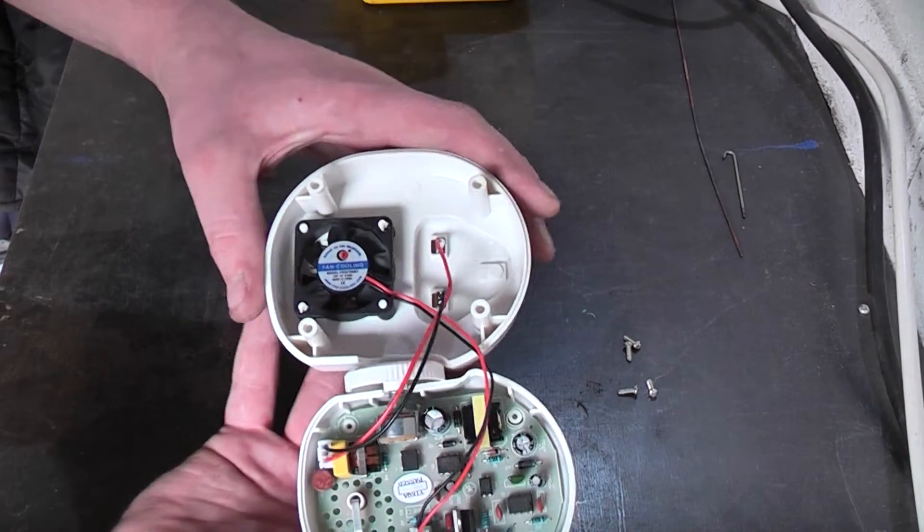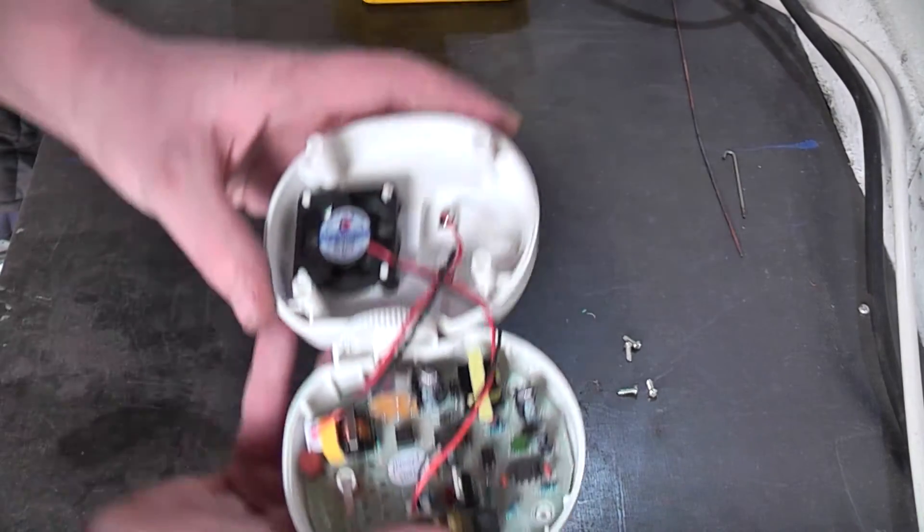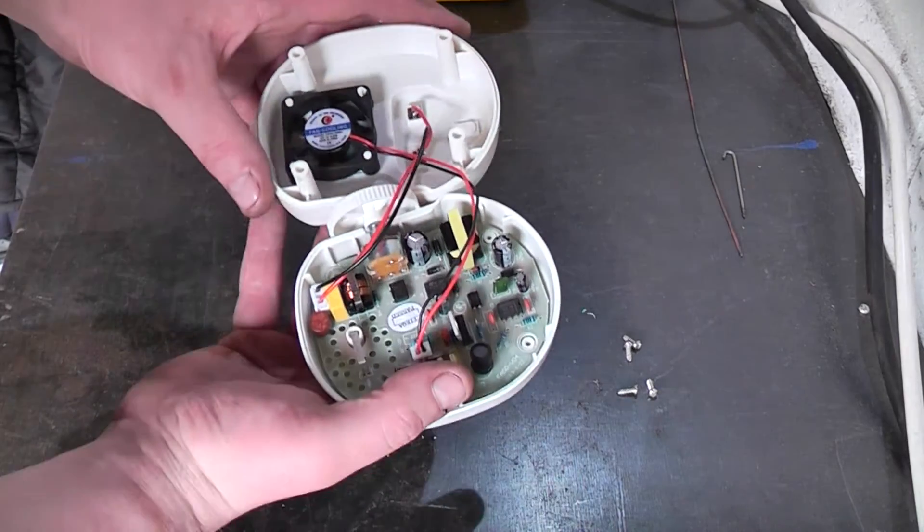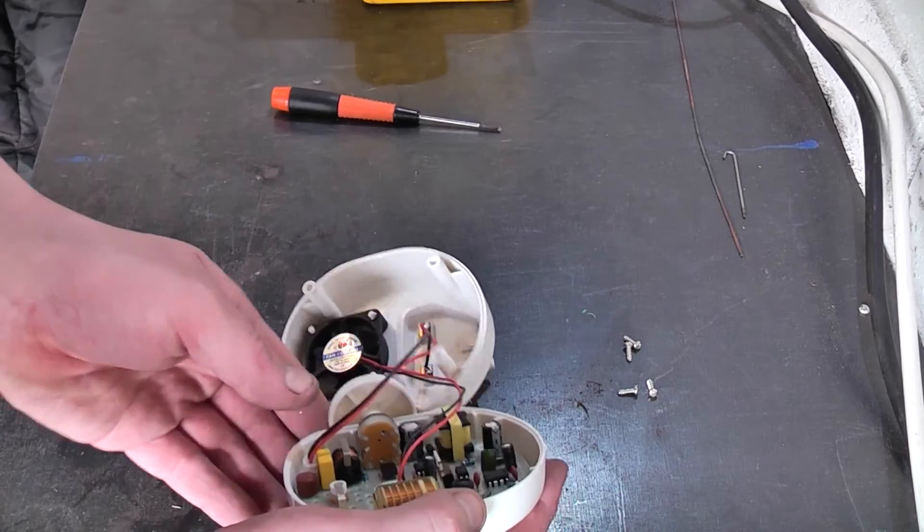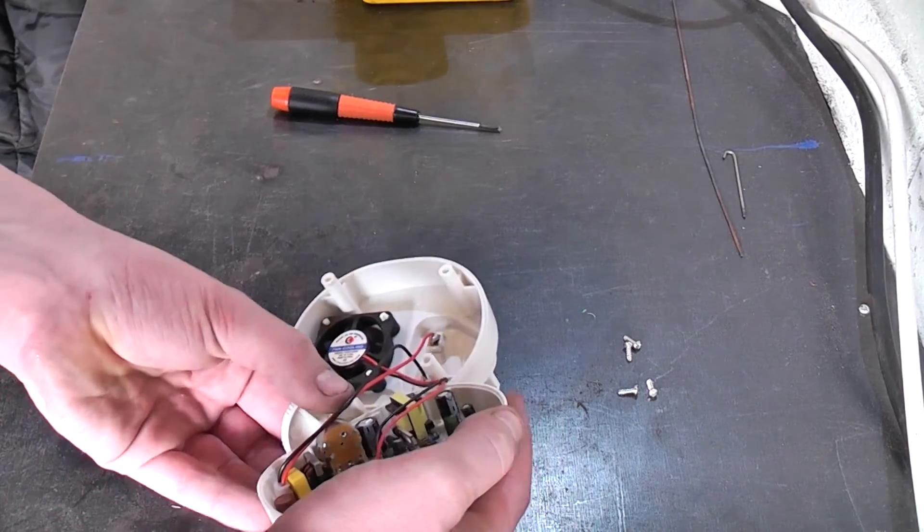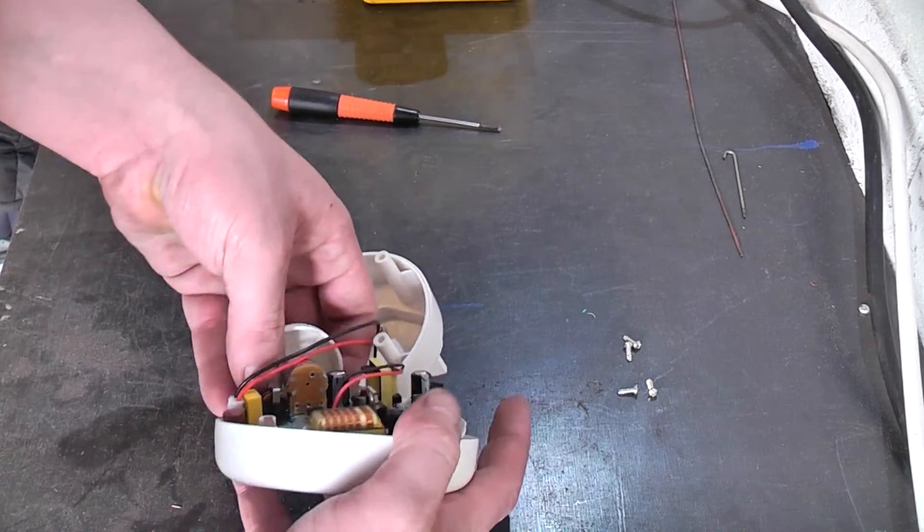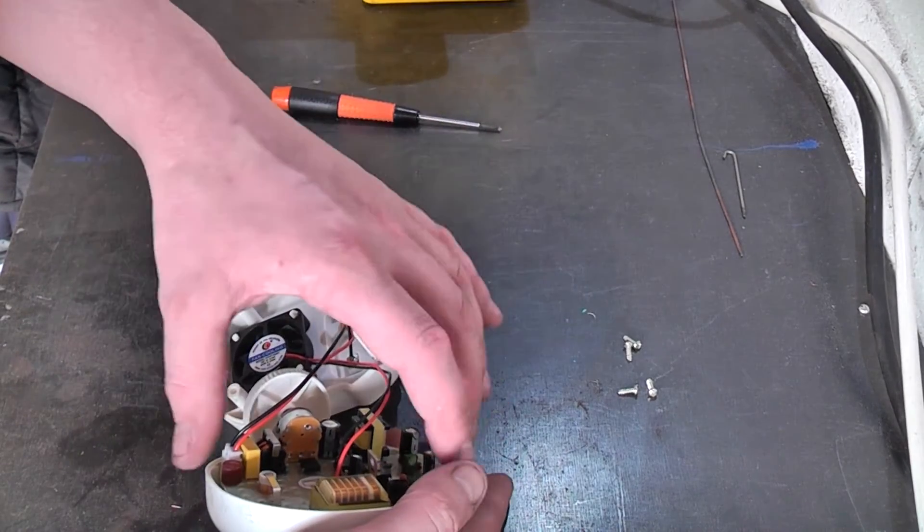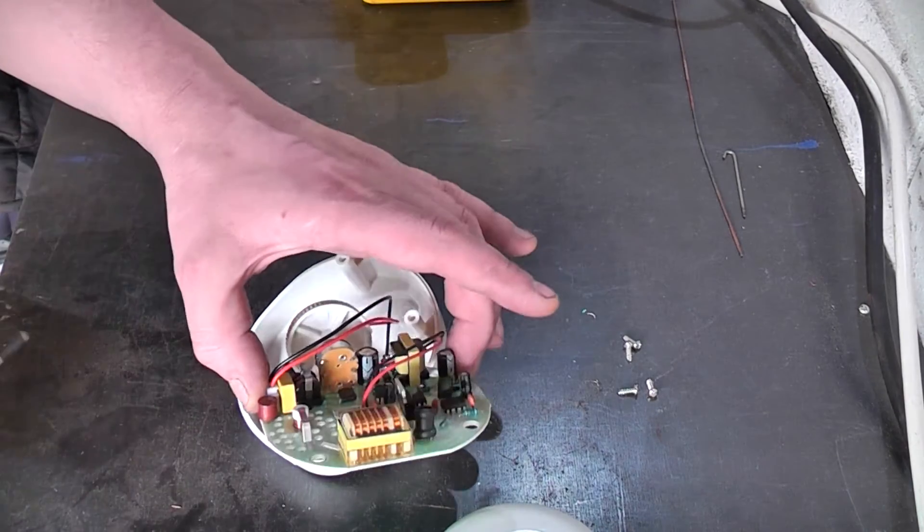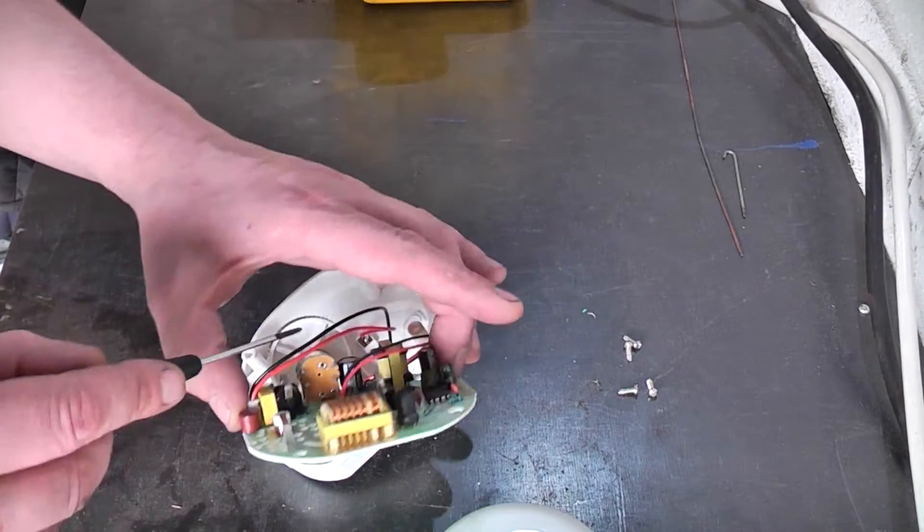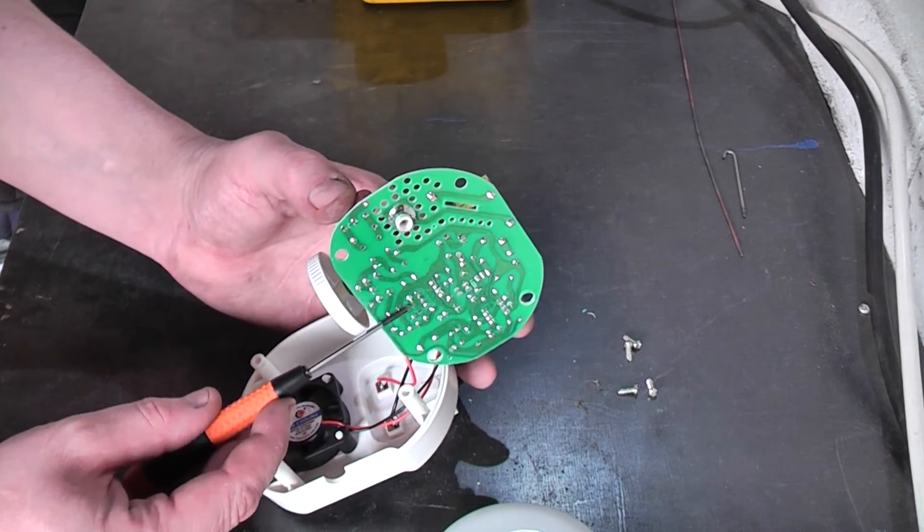Inside we've got a small fan which is rated at 12 volts, and there's the main circuit board. Let's see if this comes out. Doesn't look like it's held in by any screws. This is where I get zapped off the capacitor, so be careful. So yeah, it is a switch mode power supply and there's the 400 volt input filter cap.